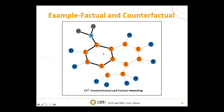As a conclusion, to overcome these problems and look for a balance between necessity and sufficiency, we combine both factual and counterfactual reasoning to extract the GNN explanations. The counterfactual objective encourages the necessary edges to be included, while the factual objective ensures that the extracted explanation contains enough information. Therefore, an ideal subgraph explanation can be created.